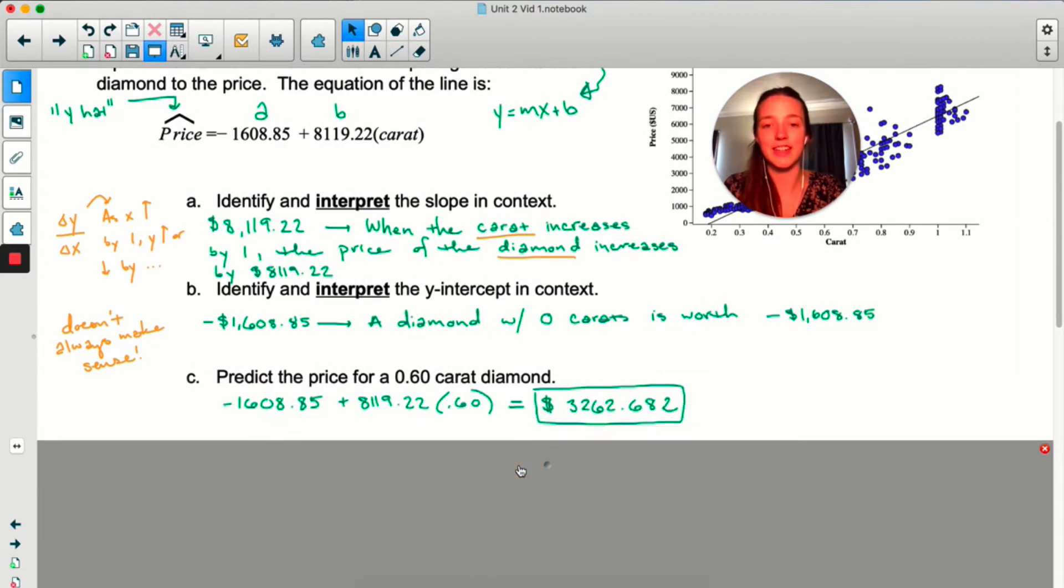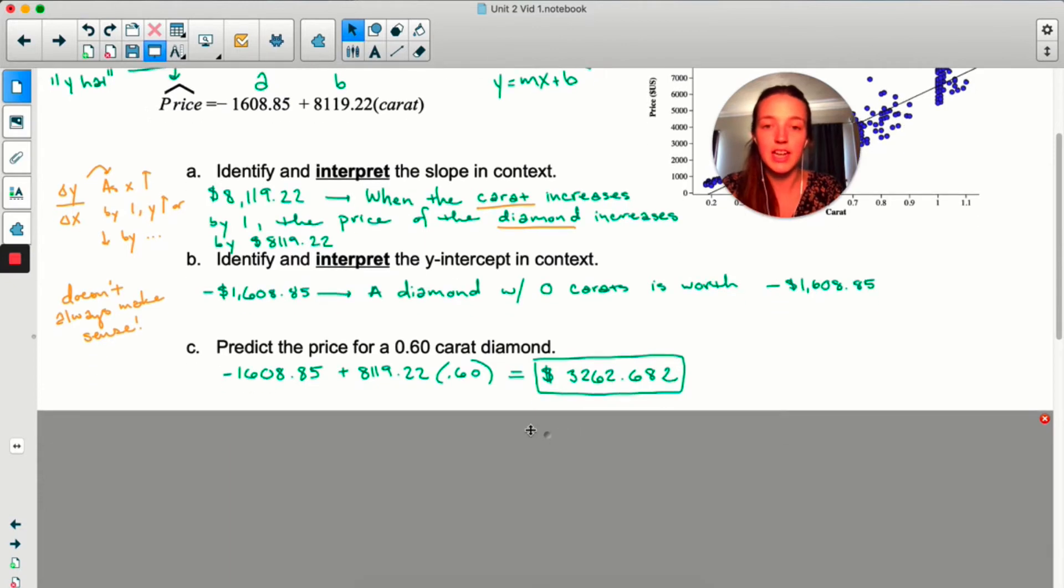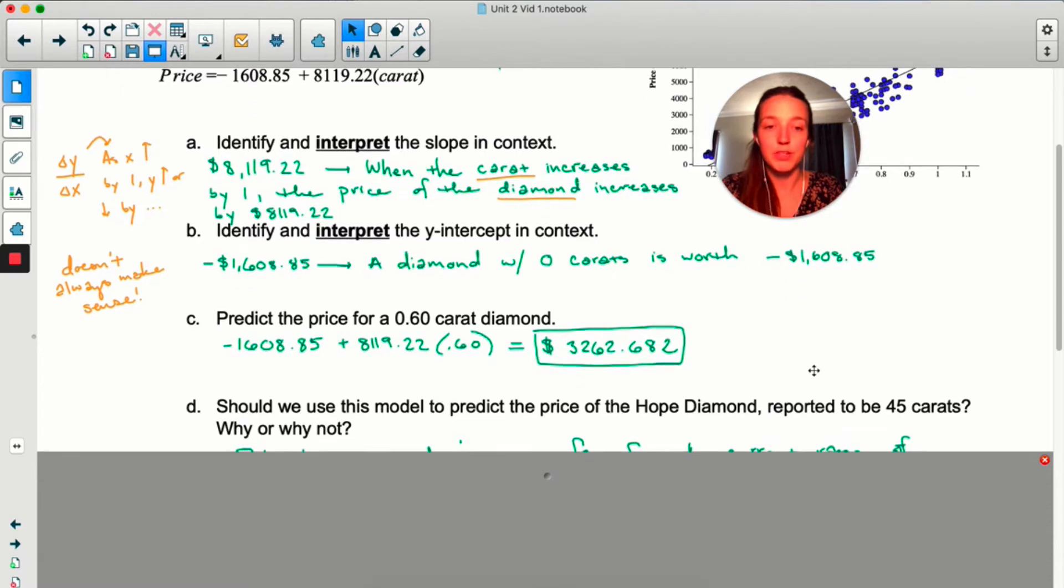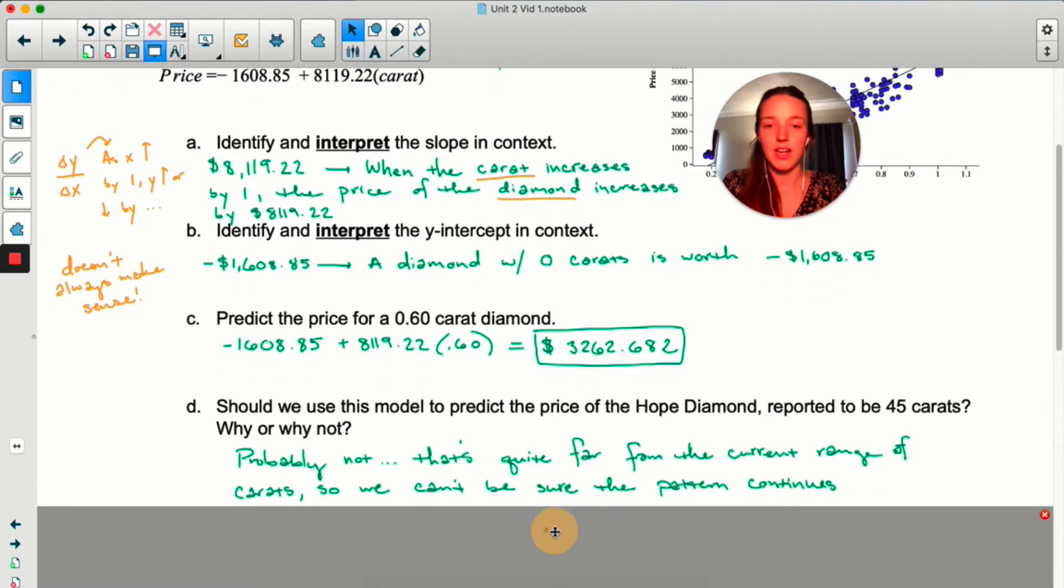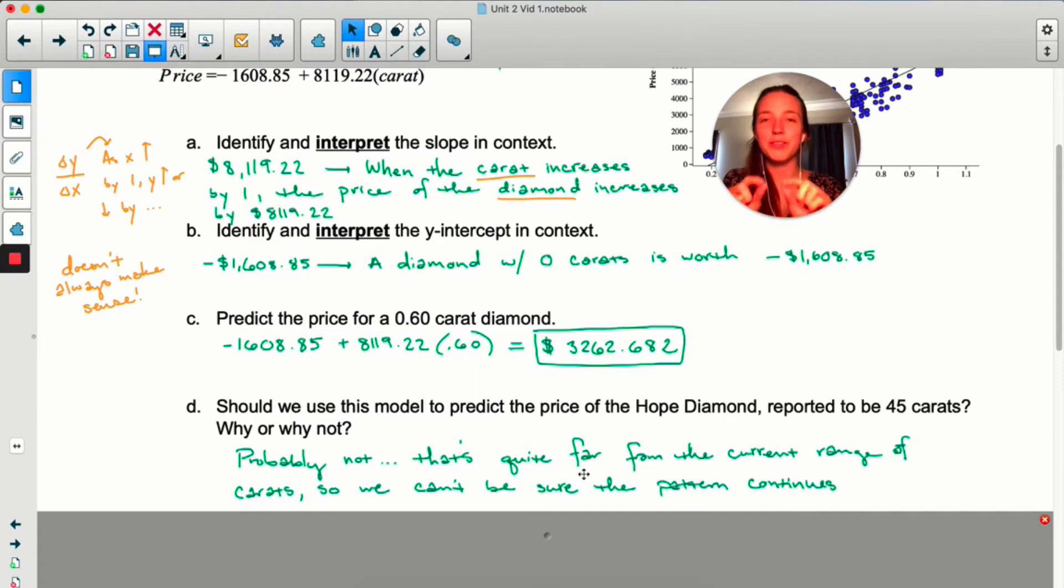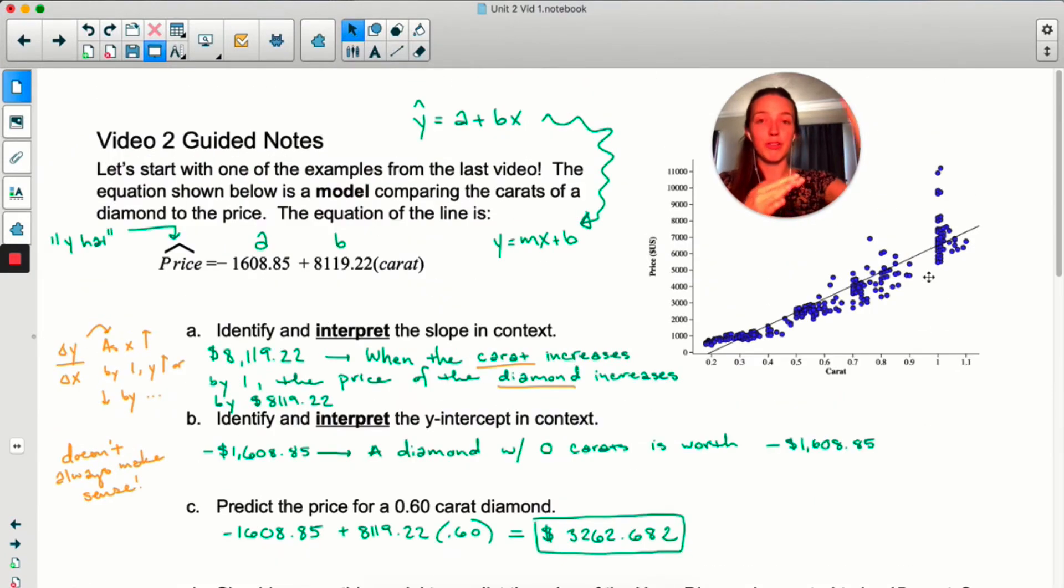Predicting the price for a 0.6 carat diamond, you're just plugging in 0.6. I feel like that's pretty self-explanatory. Should we use this model to predict the price of the hope diamond, which is around 45 carats? Probably not. This scatter plot only went up to 1.1 carats, and so we can't be sure that this pattern is going to continue all the way to 45 carats. When you use a line to predict way past your x-values range, that's called extrapolation.